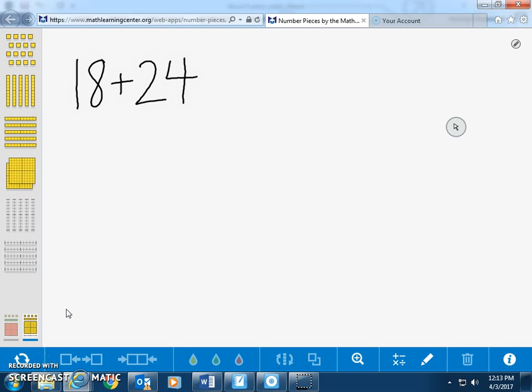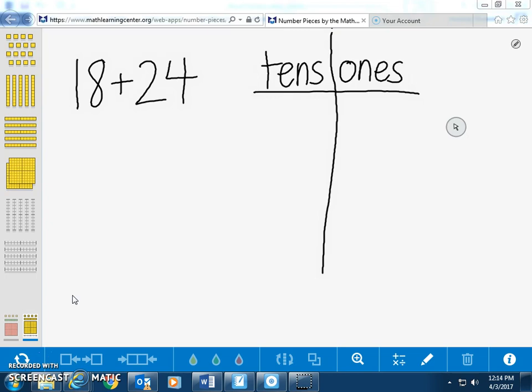The number sentence for this problem is 18 plus 24. We will be modeling the regrouping strategy with concrete, pictorial, and abstract models. We will first model how to solve this problem using concrete models.